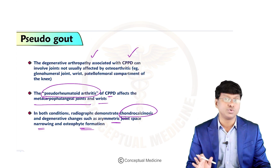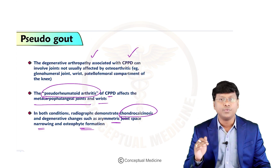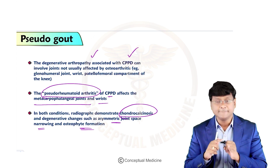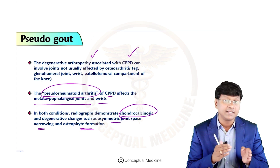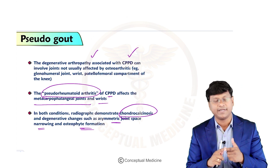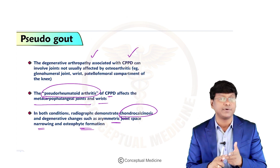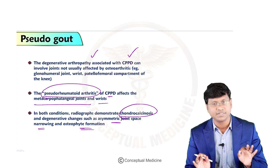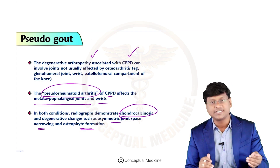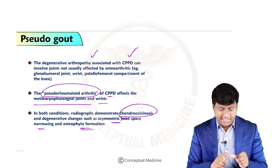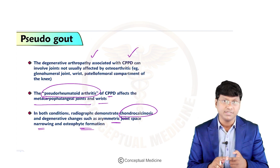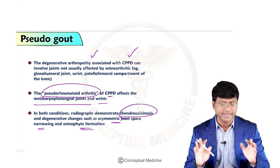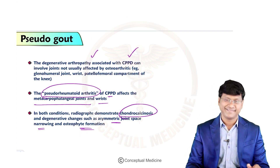In summary, pseudogout is a crystalline arthropathy where there is CPPD deposition. The most commonly affected joints are the knee joint and the wrist joint. The underlying etiologies include hyperparathyroidism, hemochromatosis, familial hypercalcemia, and hypomagnesemia. Investigations involve synovial fluid aspiration showing positively birefringent rhomboid-shaped crystals. For acute treatment, NSAIDs are used; for prophylaxis, colchicine; and for severe pseudogout, intra-articular triamcinolone injection at 10 to 40 milligrams depending on joint size.